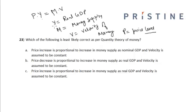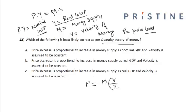So real GDP is Y, and P times Y is equal to nominal GDP. As per the quantity theory of money, we can rewrite P is equal to M times V by Y.